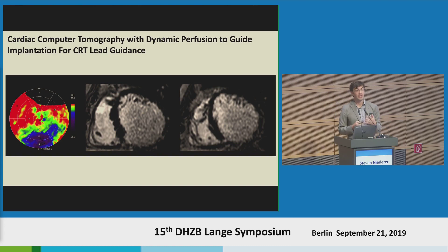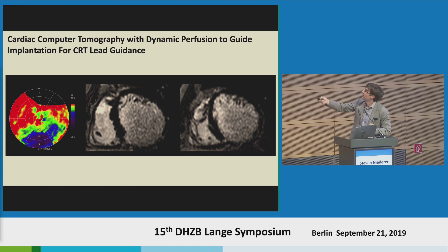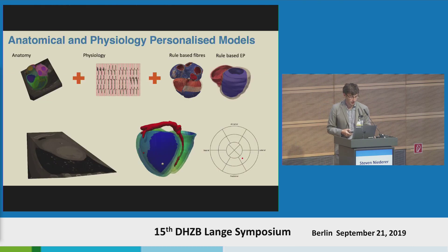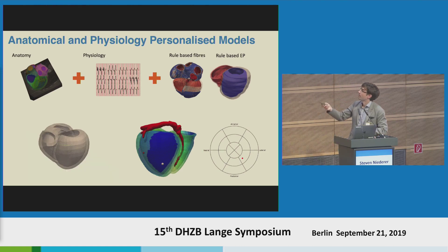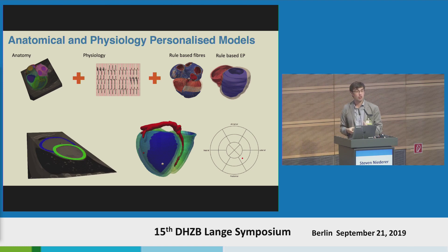For scar identification we have not had a lot of luck using late enhancement in cardiac CT, but we have been able to do perfusion CT imaging. Our perfusion CT image shows a low perfusion region corresponding to the same AHA segments as the late enhancement region seen on the patient's prior MRI, giving us confidence that low perfusion regions identify where the infarct is, and that we can use this as part of a CT-only workflow. We then make our mathematical model, taking anatomy from the cardiac CT combined with electrophysiology from the ECG, with a rule-based fibre model and a rule-based electrophysiology model including a fast endocardial conduction layer.